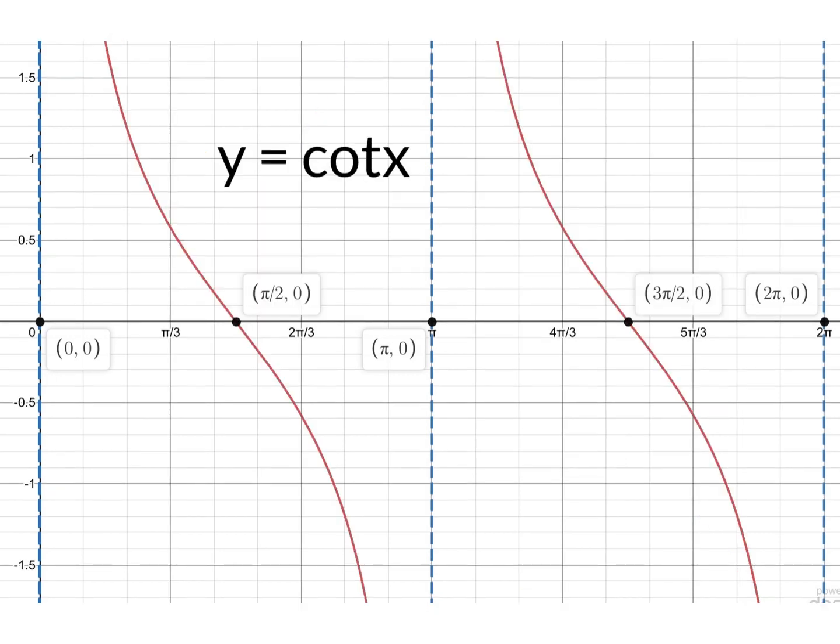And our final graph is cot x, it's the reciprocal of tan, so where tan was 0 at 0, π, and at 2π, we now have asymptotes, and the asymptotes for tan, which is at π/2 and 3π/2, it's now 0.